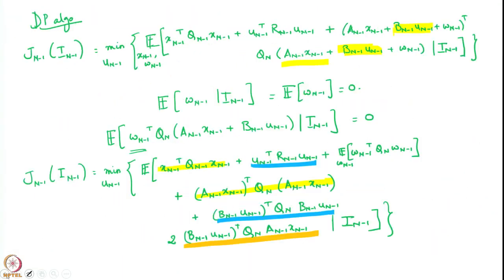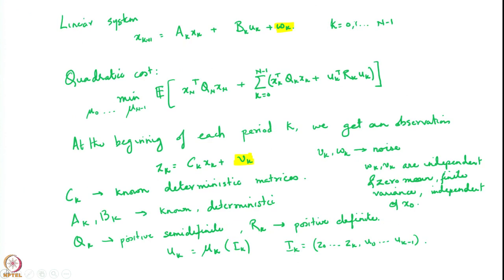Welcome back everyone. Let us recall where we were — we were trying to solve a linear quadratic system of a particular form, where the state evolved in a linear fashion and we had a quadratic cost to minimize. The observations at each time were a linear function of the state corrupted by noise. The information at each time step was all observations and actions so far, and we were minimizing this cost with respect to policies where the policy at time k, mu_k, was chosen as a function of i_k alone.